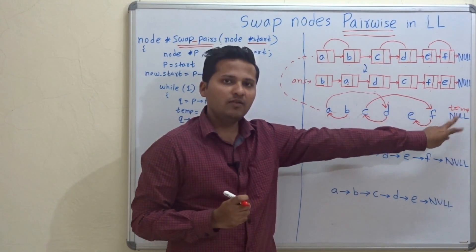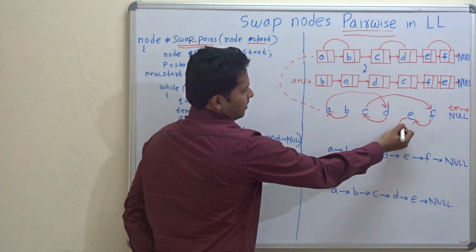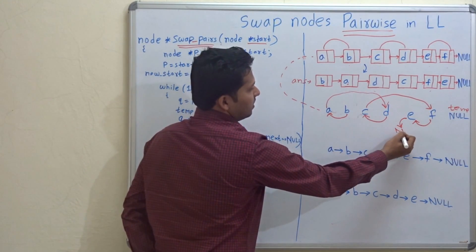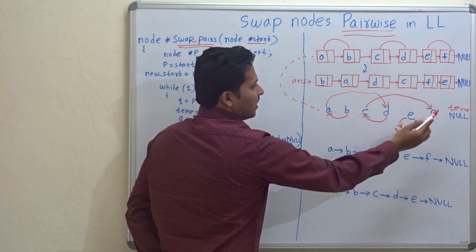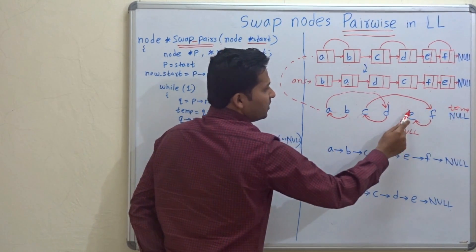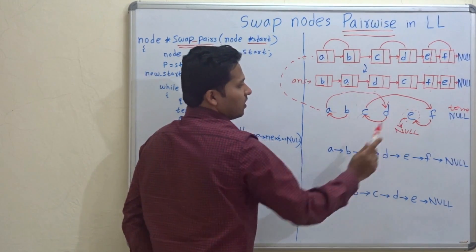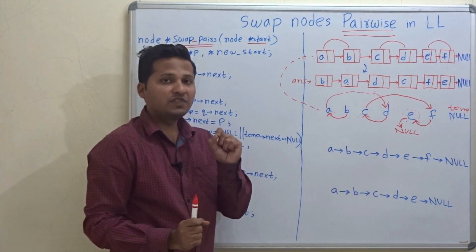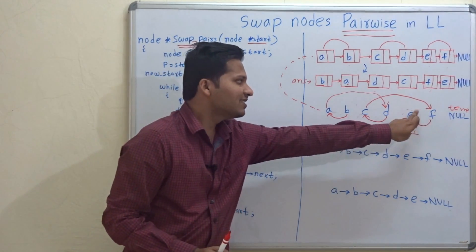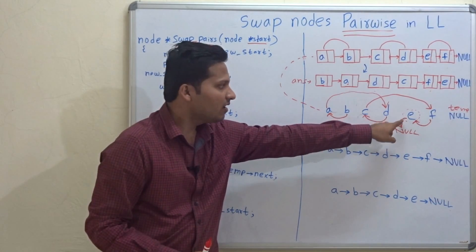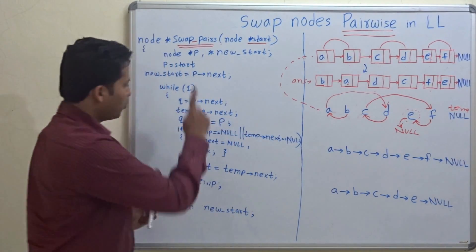Now let's go to the third pair. Temp will point to null. As we have stored null in temp, we can change the pointer to E. Because temp is holding null, this is the breaking condition for this program. As temp is pointing to null, we can make the next pointer of E as null, meaning E is the last node of this new swapped linked list.